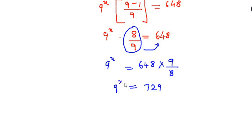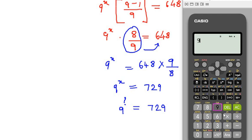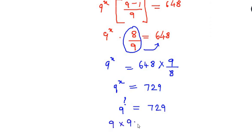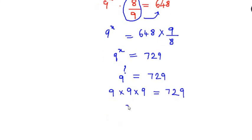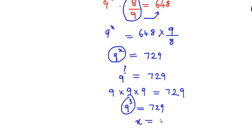Now, 9 to the power of what gives us 729? Let's check: 9 times 9 is 81, times 9 again is 729. So 9 has to be multiplied 3 times with itself, meaning 9^3 equals 729. Comparing, the power x equals 3.